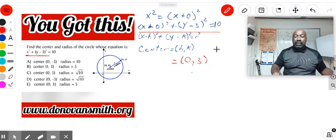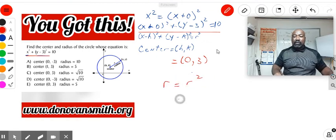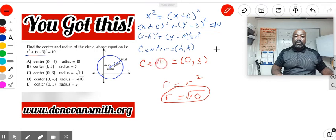And then to find the radius, to find what the radius is of this r squared, what you have to do is that r squared is just 10 right here. So basically what you have to do is take the square root of that, and so therefore your radius right here is square root of 10, and your center right here is just (0, 3). Yes, that's the center of the circle.